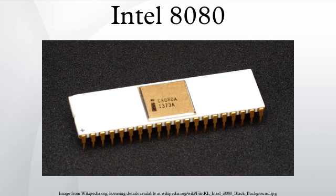The 8080 supported up to 256 input-output ports, accessed via dedicated I/O instructions taking port addresses as operands. This I/O mapping scheme was regarded as an advantage, as it freed up the processor's limited address space. Many CPU architectures instead use so-called memory-mapped I/O, in which a common address space is used for both RAM and peripheral chips.